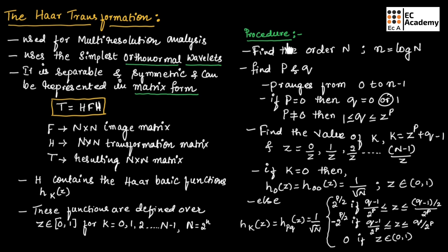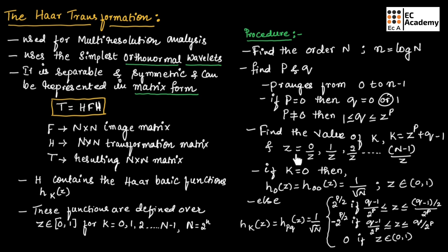Let us see the procedure to find the Haar transformation. First, we need to find the order n by taking n equal to log n. Then, we need to find the values of P and Q, where P ranges from 0 to n minus 1. If P equals 0, then Q equals 0 or 1. If P is not equal to 0, then Q ranges between 1 and 2 to the power of P. Then, we find the value of K using K equals 2 to the power of P plus Q minus 1, and Z equals 0/Z, 1/Z, 2/Z and so on up to (n−1)/Z.